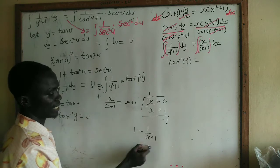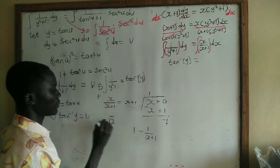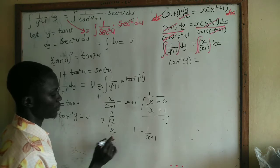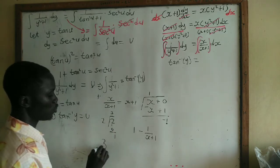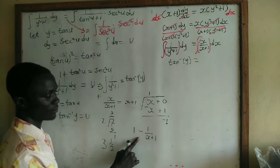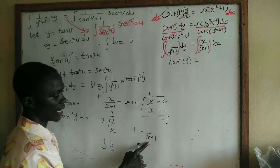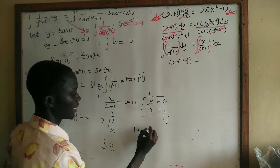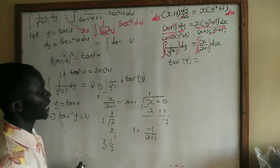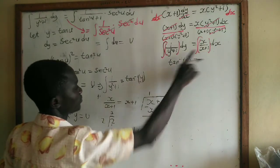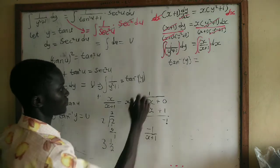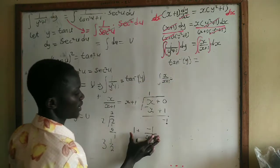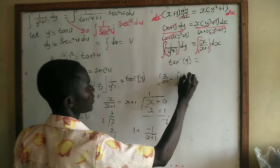So x/(x + 1) equals 1 − 1/(x + 1). Remember: if you divide 7 by 2 you get 3 remainder 1, written as 3 and 1/2. In the same way, here we get 1 as the whole number and −1/(x + 1) as the fractional part. So if we want to integrate x/(x + 1), we integrate 1 + (−1)/(x + 1).